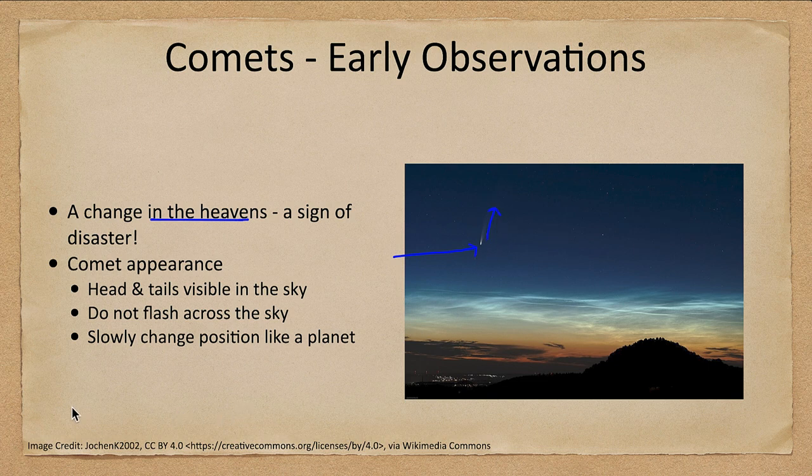A comet does not flash across the sky — it is very different than a meteor. Meteors, or shooting stars, just flash across the sky. A comet would just sit there and would rise and set with the other objects, slowly changing its position much like a planet.